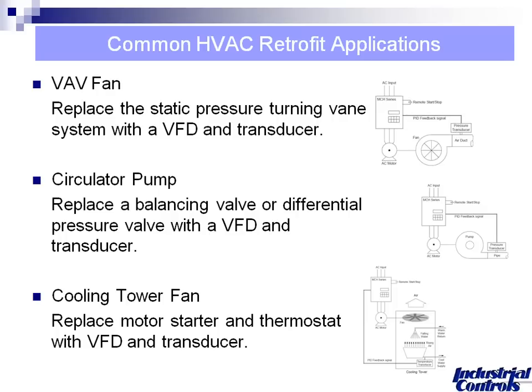For a circulator pump, it's differential pressure between supply and return. As valves close, pressure builds — called deadheading. Typically a valve between supply and return dumps pressure back to the return, but the motor is still running full speed. We can just slow the motor down and make it more efficient. For cooling tower fans: the fan is typically either on or off. On cooler days we can slow it down. Instead of modulating a damper, we modulate the motor speed and save energy with better control.